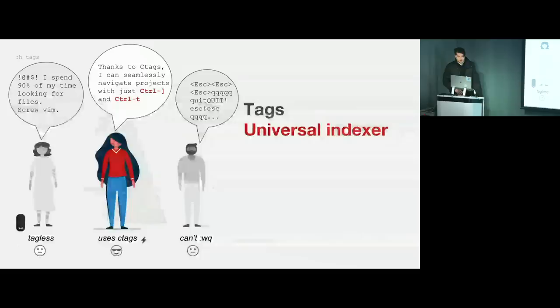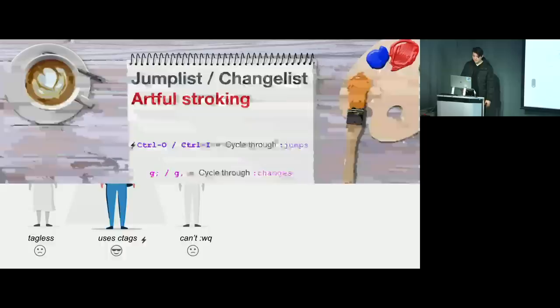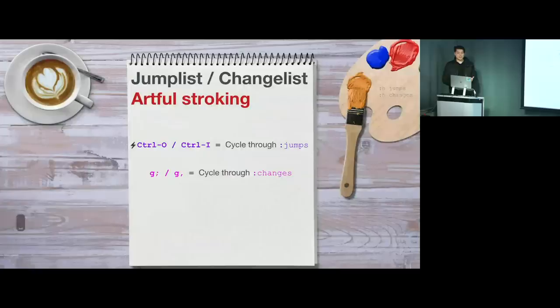Tags are the universal indexers of Vim. Vim supports other methods of jumping to different local declarations, but as a beginner, tags will be most useful. The person who uses tags can seamlessly navigate through projects using Ctrl-] and Ctrl-T. Without tags, you'll hate Vim and think all other IDEs are better. Next, the jump list and change list — what I call artful stroking.